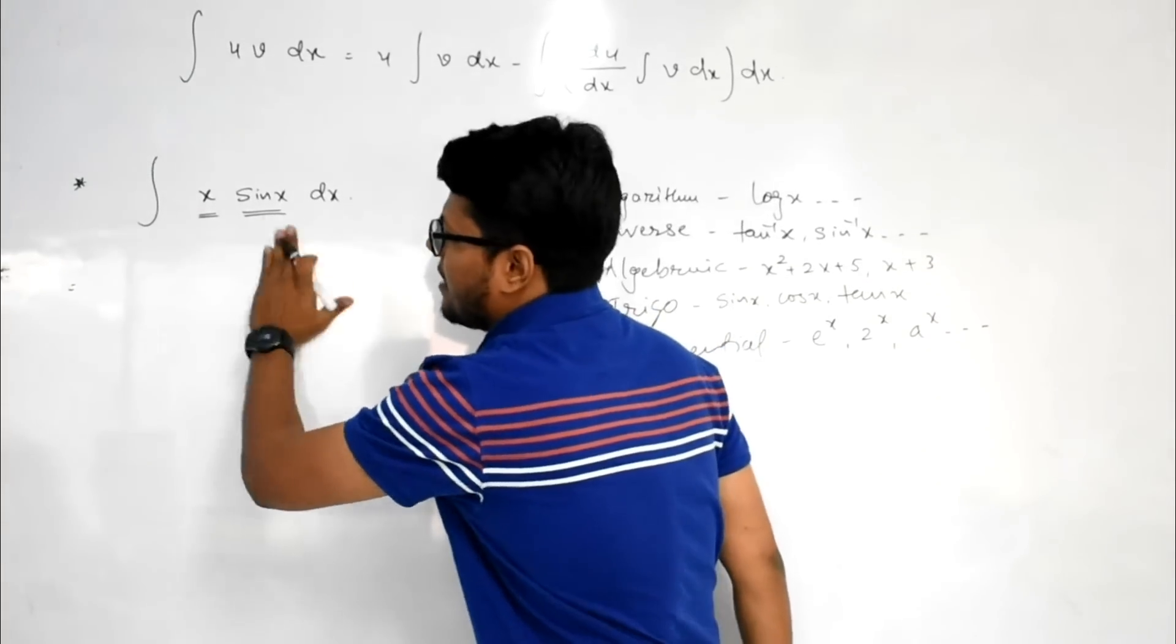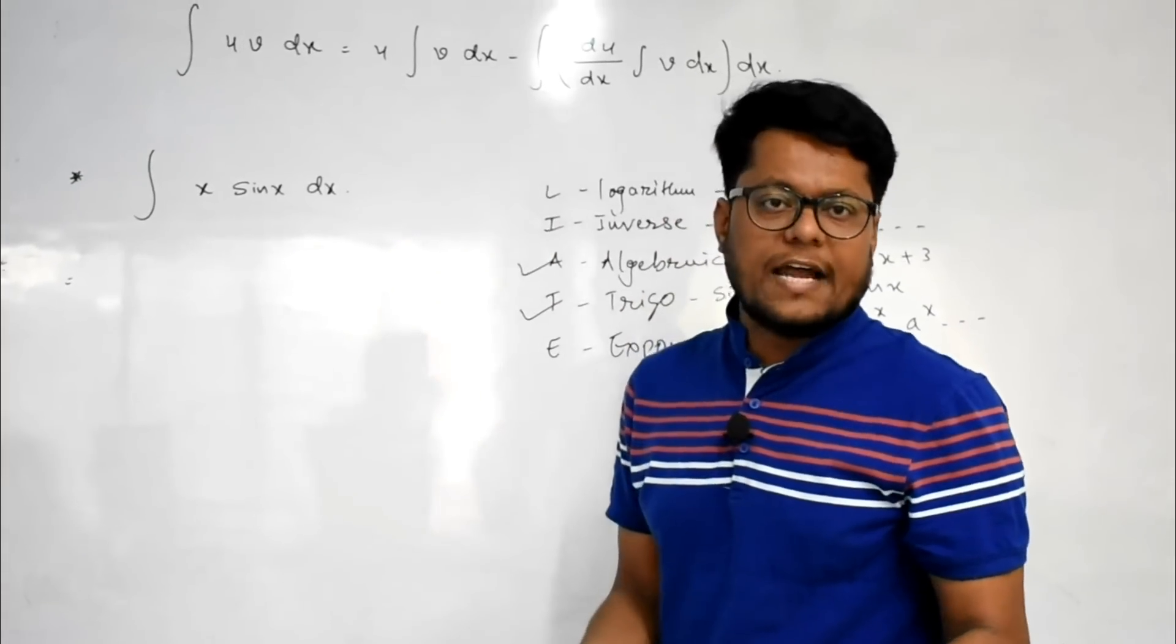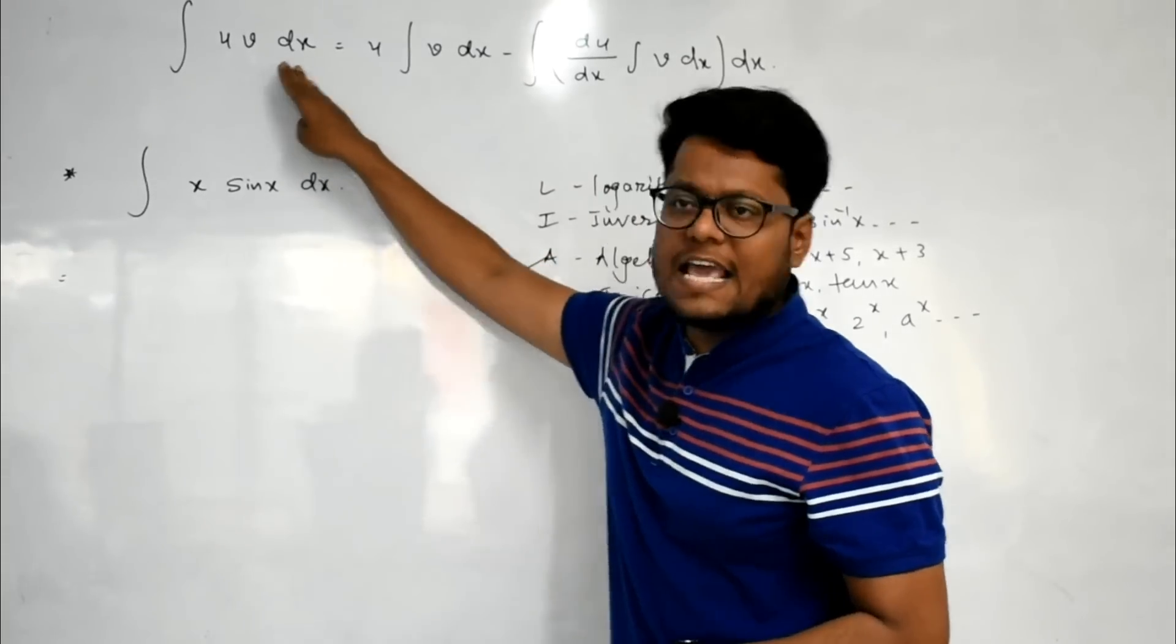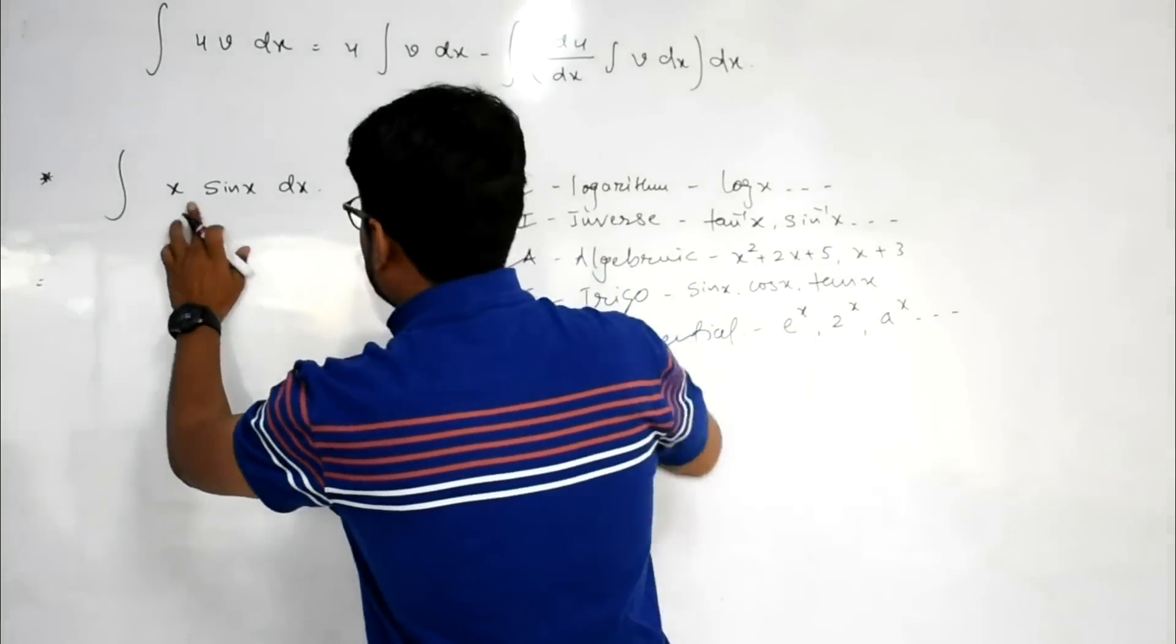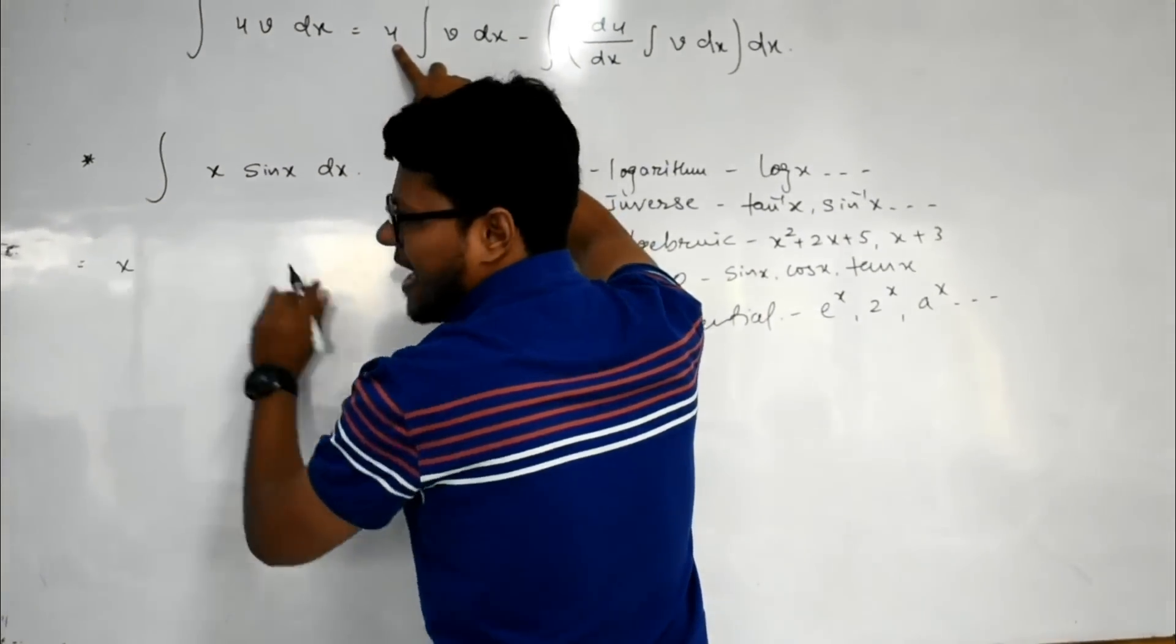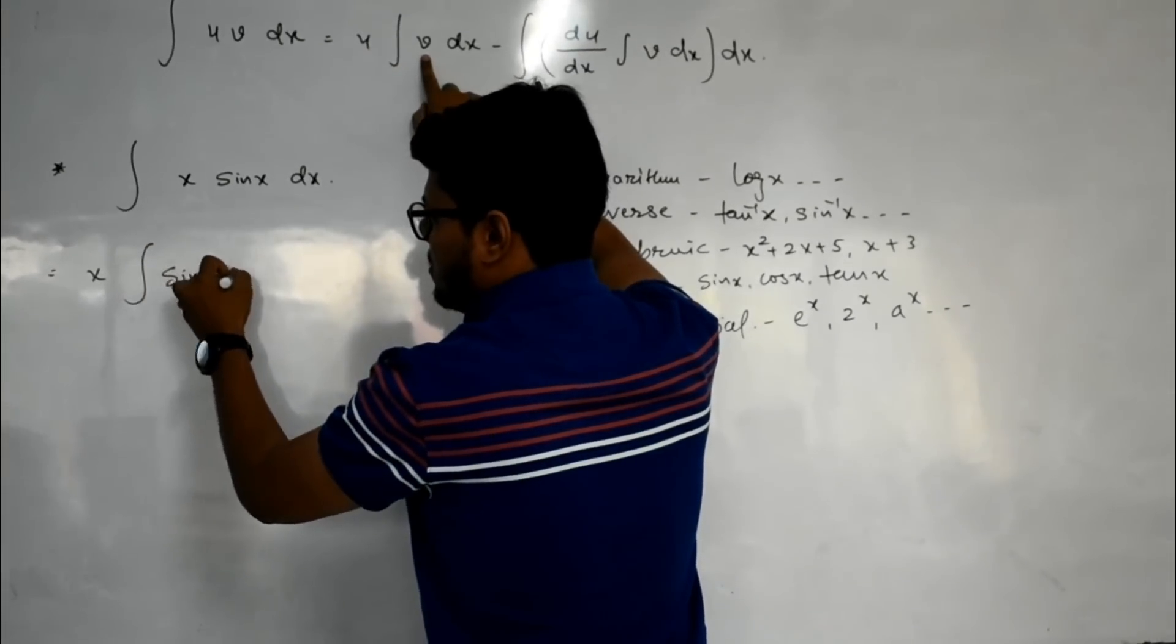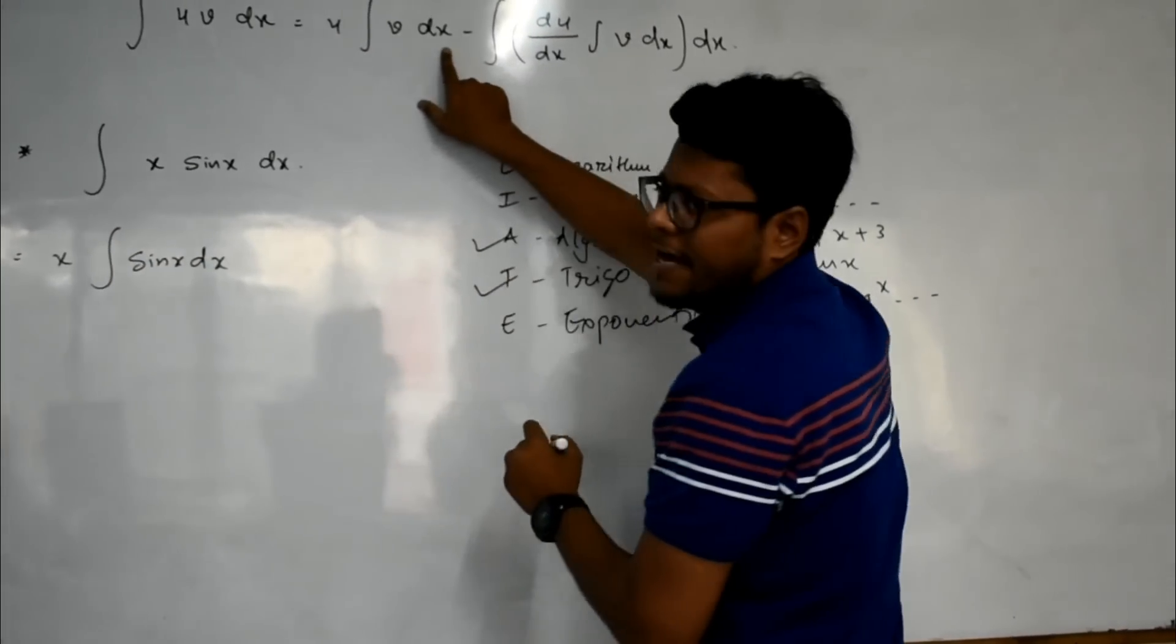Now, once we conclude that u is x and v is sin x, then we can directly apply this rule. So the rule is u, so u is our x, integration v, so v is sin x, then dx is already there.